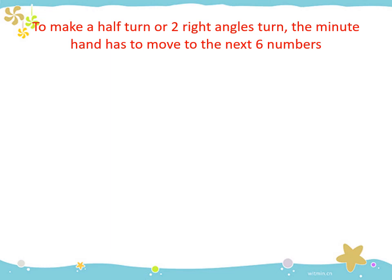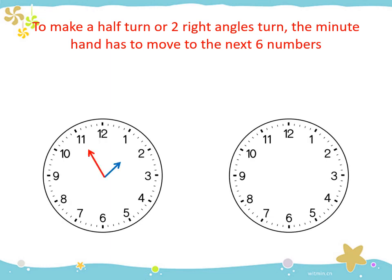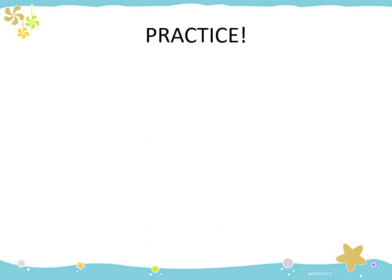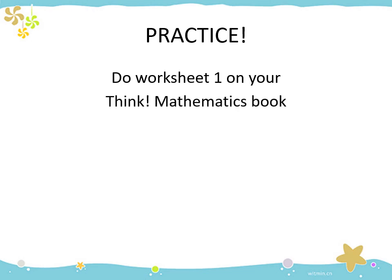To make a half turn or 2 right angles turn, the minute hand has to move to the next 6 numbers. Here is the clock showing 5 minutes to 2. If the minute hand makes a half turn in the clockwise direction, where will the minute hand and hour hand be placed? It will point to 5 — the clock will show 25 minutes past 2. After you understand how to make a quarter and half turn, do worksheet 1 in your Think Mathematics workbook, pages 147 to 148.